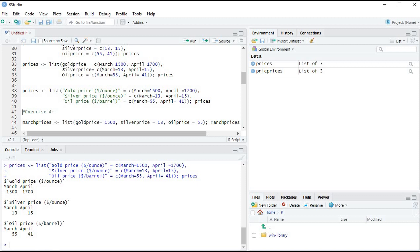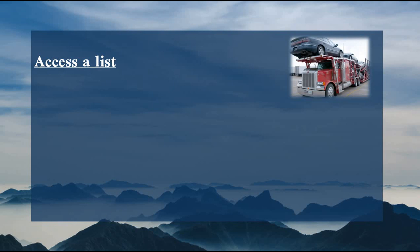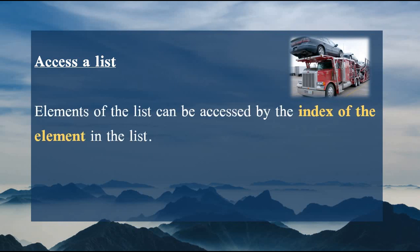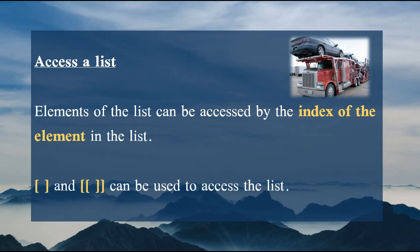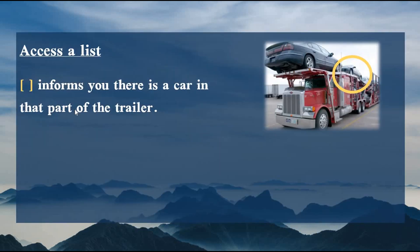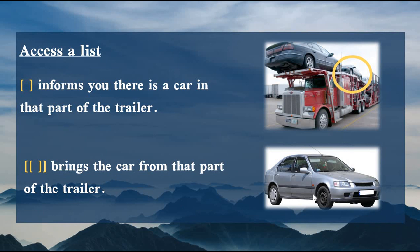This is also useful because — as in the previous video where we named students in a matrix — we used a list to name it, and now you understand how to do that. Elements of a list can be accessed by index using either single brackets or double brackets. The difference: single brackets are like being informed there is a car in part of a trailer, while double brackets bring the car down to you from the trailer.